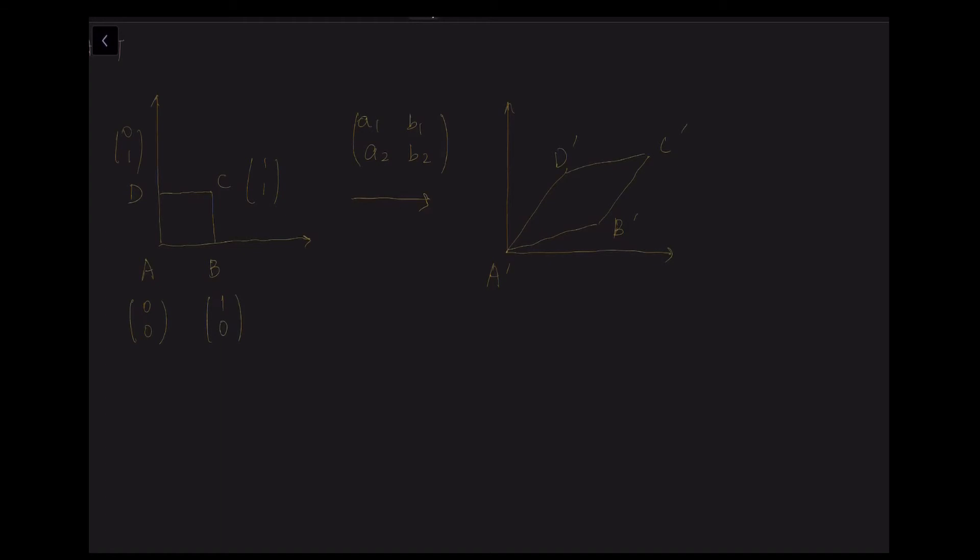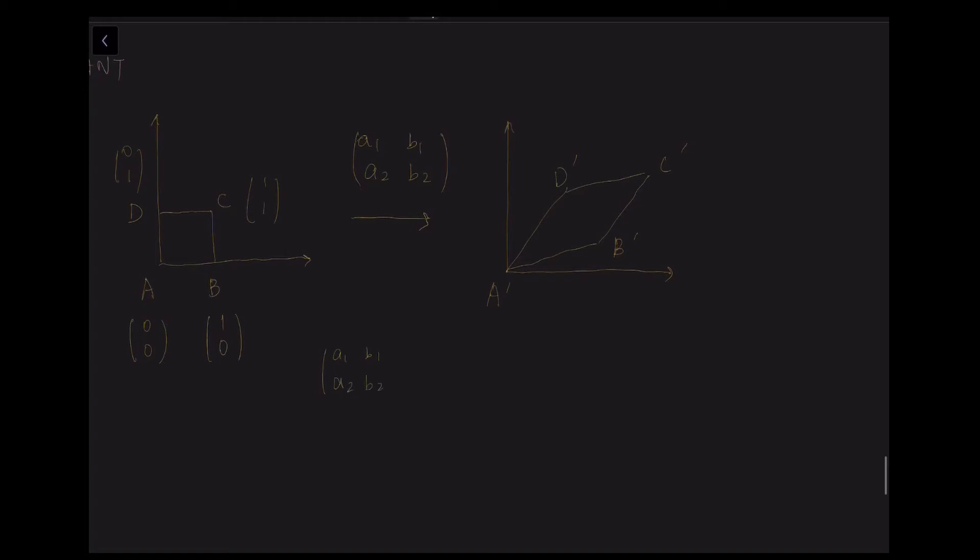The matrix that we have written A1, A2, B1, B2 will be the transformation function that changes the whole square into a parallelogram. So this is performed in a simple way, which is the matrix multiplication. So we rewrite the 4 points and multiply it with the matrix and we obtain new coordinates.